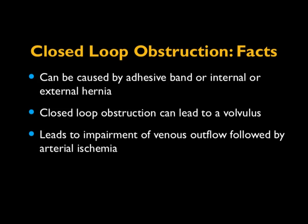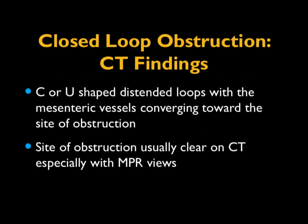Most commonly it is caused by adhesive bands, but also internal hernias or external hernias. The closed-loop obstruction can lead to a volvulus, which can lead to impairment of venous outflow, followed by arterial ischemia. The classic appearance is C or U-shaped distended loops with the mesenteric vessels converging toward the site of obstruction. It's usually easy to see on CT if you're careful, but particularly well seen on the coronal or 3D images.